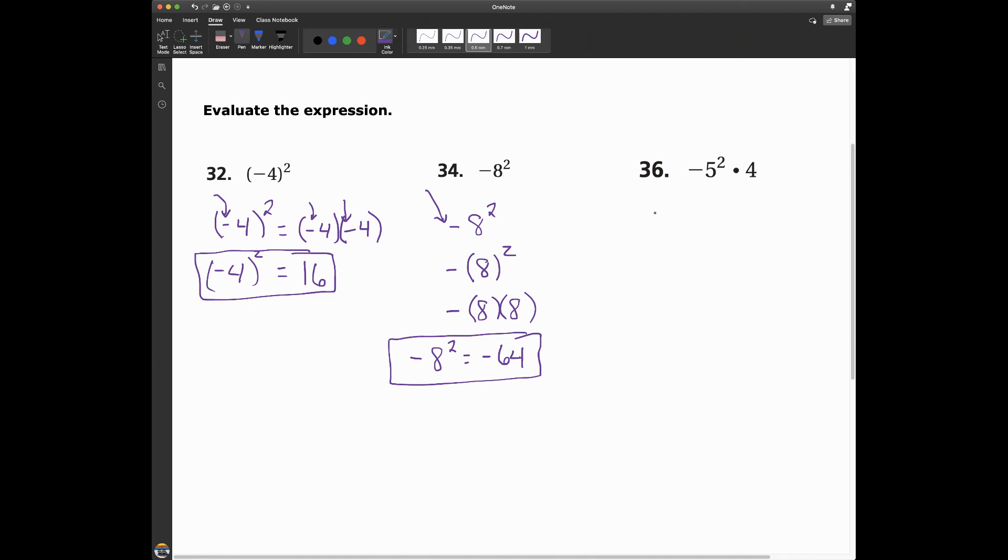Let's look at problem 36. For this one, I have negative 5 to the second power times 4. This negative sign means I'm going to have negative, and then in parentheses, there's another way I can write this. I can write this as 5 times 5, like that. And then this is also multiplied by 4.